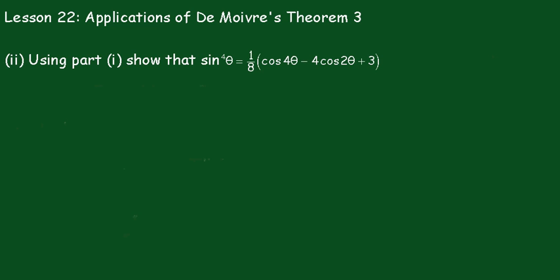Now if you recall from part 1 we had that Z^n minus Z^(-n) was equal to 2i sin nθ.